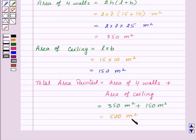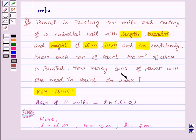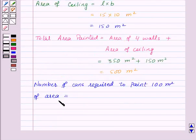So Daniel has painted 500 square meters of area. From each can of paint, 100 square meters of area is painted. Number of cans required to paint 100 square meters of area = 1, as given in the question. This means number of cans required to paint 1 square meter = 1/100.